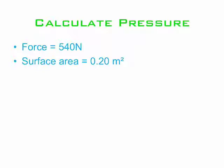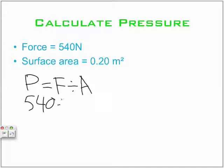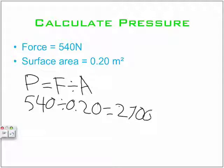Calculating pressure. Force equals 540 N, and the surface area equals 0.20 meters squared. So pressure equals force divided by area, which is 540 divided by 0.20, equals 2,700 N/m squared, which is also 2.7 kPa.